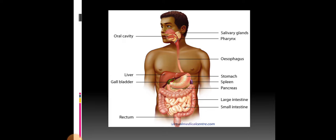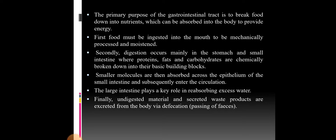The primary purpose of the gastrointestinal tract is to break food down into nutrients which can be absorbed into the body to provide energy. First, food must be ingested into the mouth to be mechanically processed and moistened. Secondly, digestion occurs mainly in the stomach and small intestine where proteins, fats, and carbohydrates are chemically broken down into their basic building blocks. Smaller molecules are then absorbed across the epithelium of the small intestine and subsequently enter the circulation. The large intestine plays a key role in reabsorbing excess water. Finally, undigested material and secreted waste products are excreted from the body via defecation, called passing of feces.